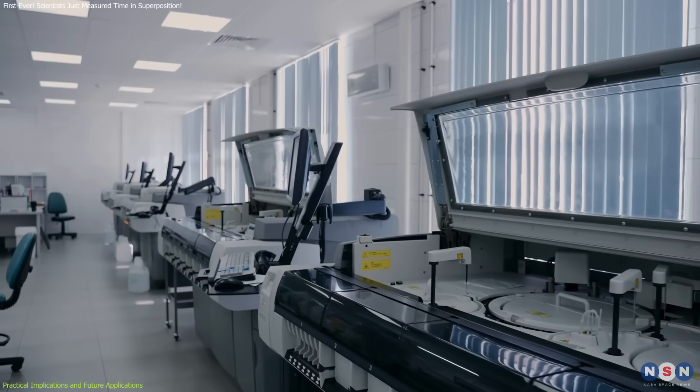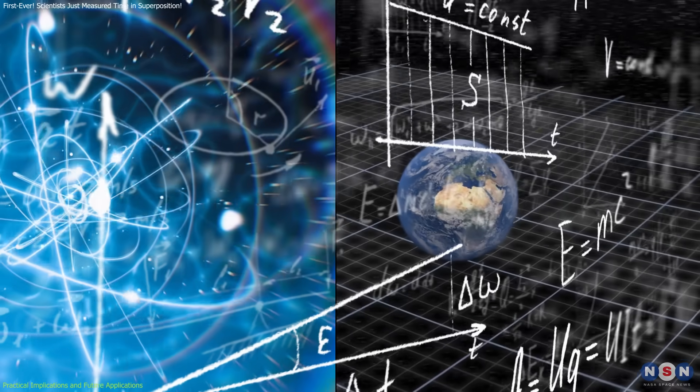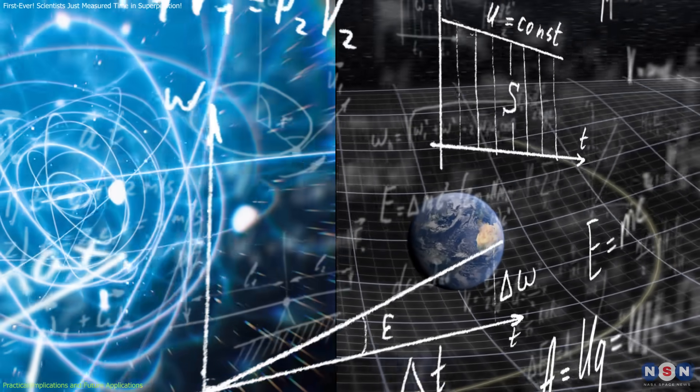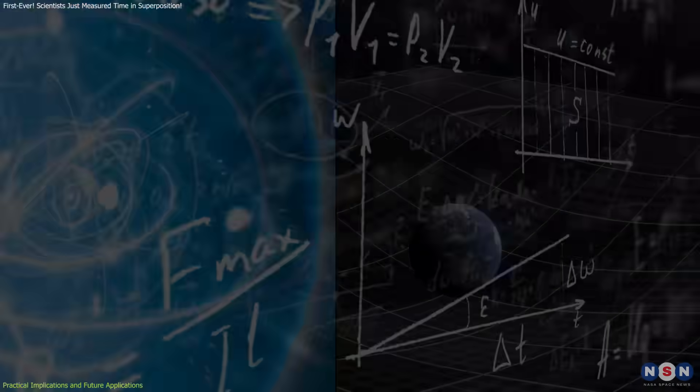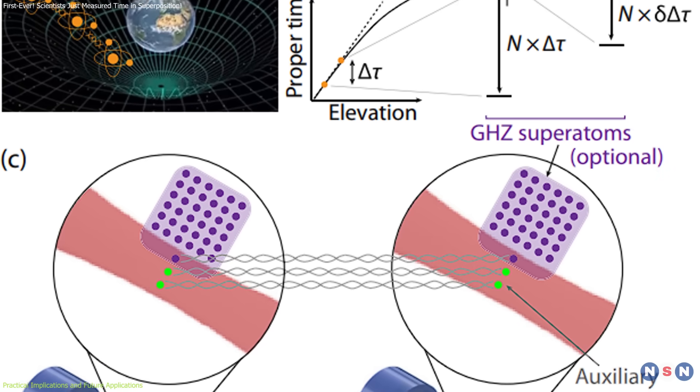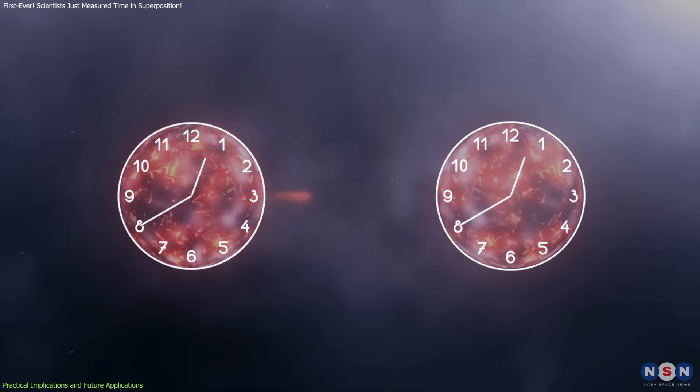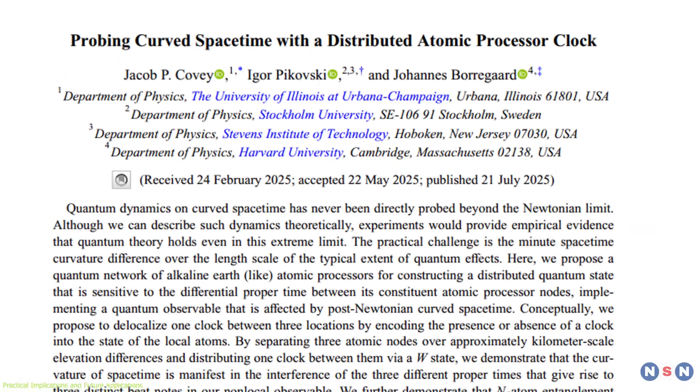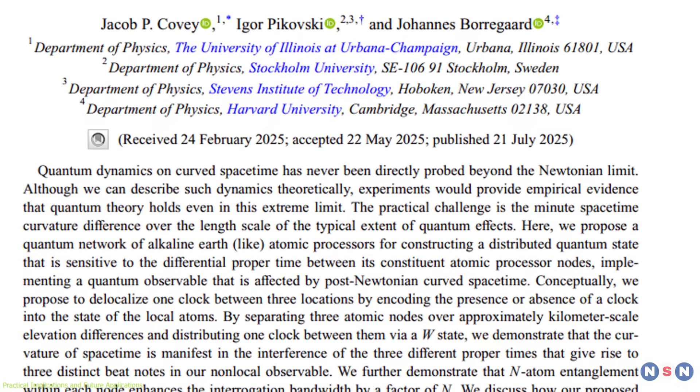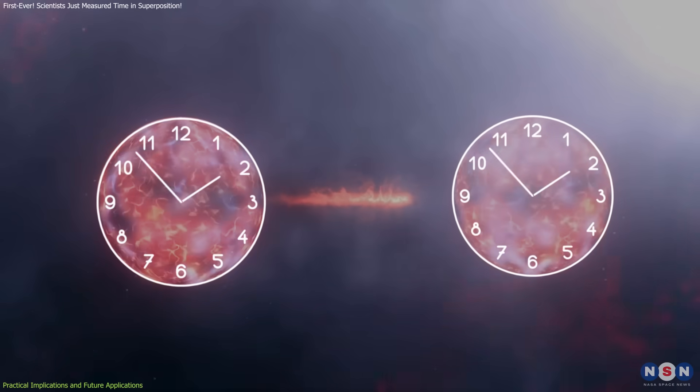Fifth, it sets a precedent for laboratory-scale tests of quantum gravity. Most attempts to study this frontier rely on theoretical models or indirect cosmological observations. A tabletop experiment that measures real-time effects on entangled systems represents a shift in how we approach this area of science. Looking ahead, the research team will likely refine their protocol, focusing on minimizing environmental noise and maintaining entanglement over distance.